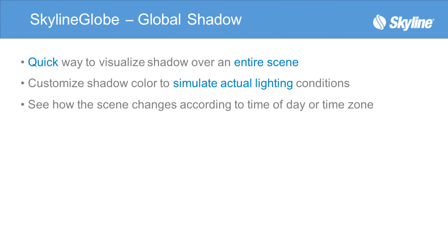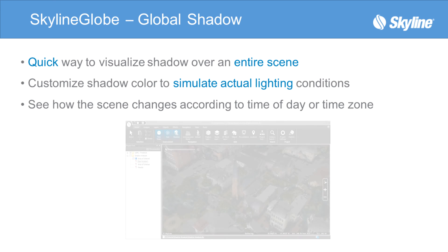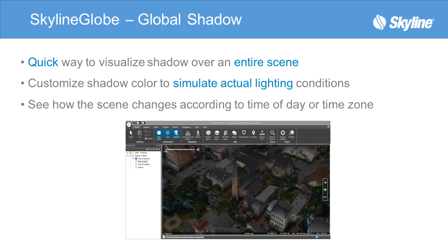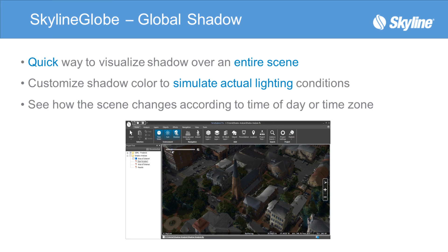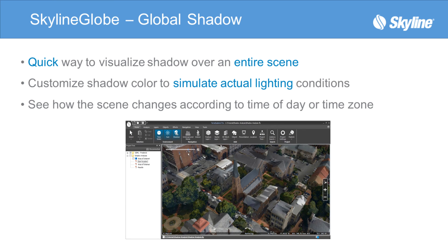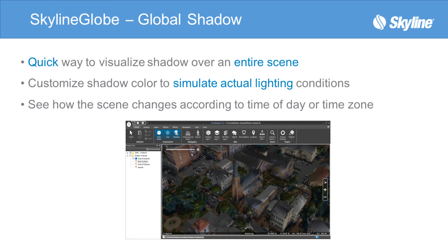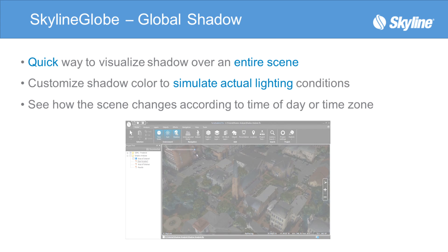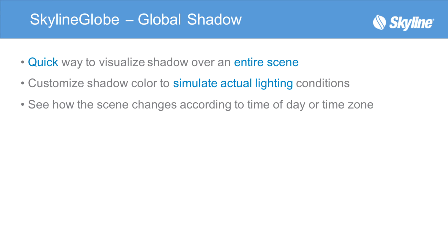Global Shadow displays the shadow effect over the entire scene in the 3D window. This affects all 3D models, objects, and buildings. It simulates the actual lighting from the angle of the sun as set by the user. You can use the time slider to see how the shadow changes in the scene according to the time of day and date.